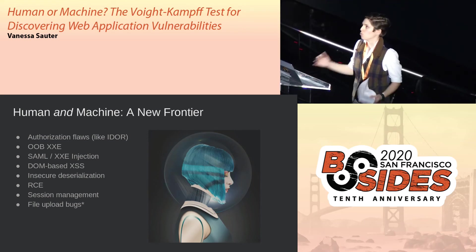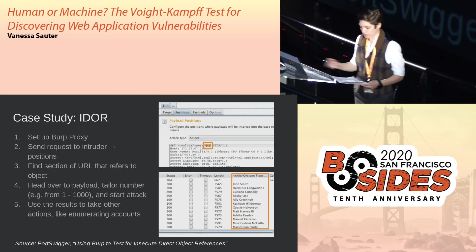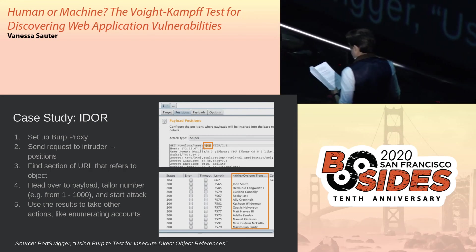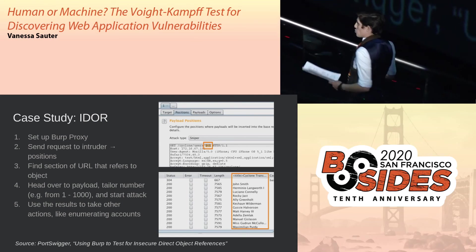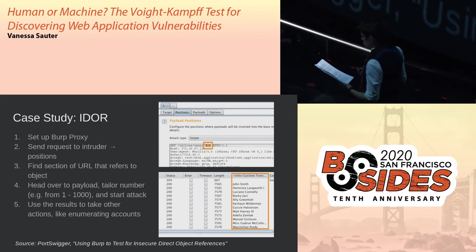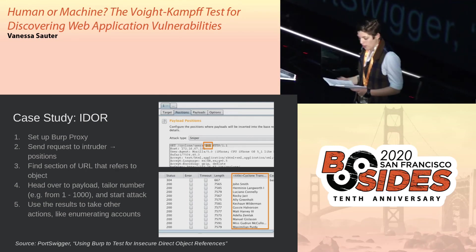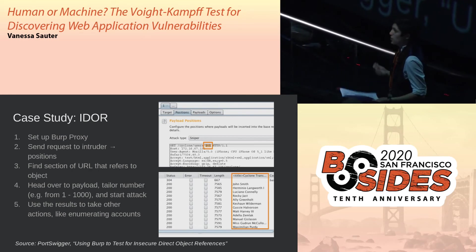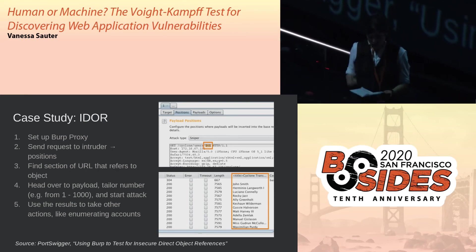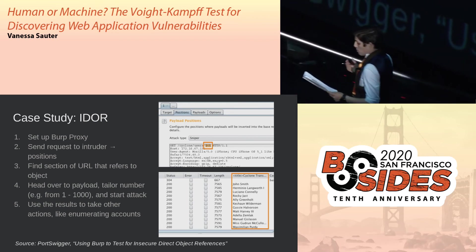As a case study on why some vulnerabilities rely on both humans and machines, take IDOR. PortSwigger's instructions for finding an IDOR clearly demonstrate exactly how humans rely on tools. First, you set up Burp proxy, then send a request to Intruder, find the section of the URL that refers to an object, head over to the payload, tailor the number, and start the attack. From there, you can enumerate accounts. The machine does most of the work, but the human must first identify input that's a direct object reference, then send a thousand iterations — then the proxy does the rest.